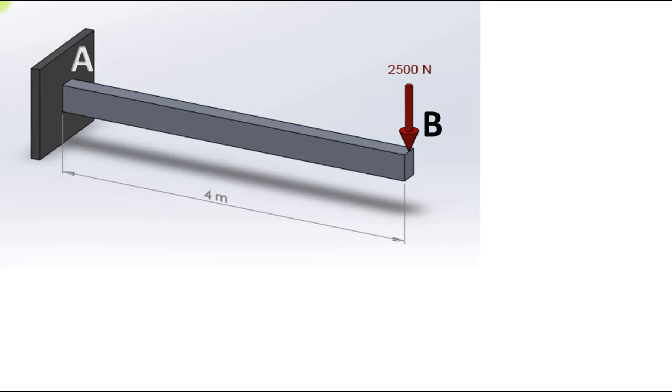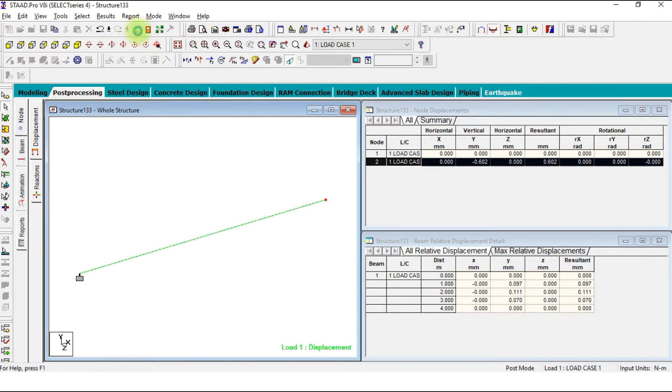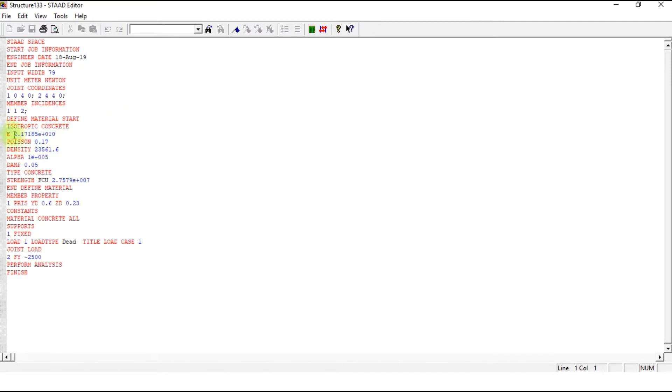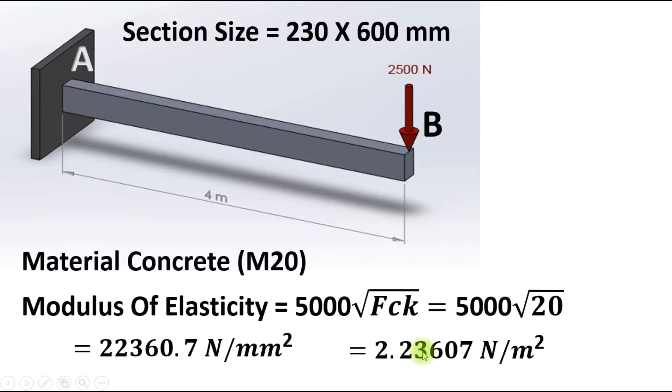The modulus of elasticity STAAD will use is 4700 root fck, but in IS code, in Indian code, we are using a modulus of elasticity 5000 fck, so it is 2.23 Newton per meter square. Let's check it out. The modulus of elasticity in STAAD is 2.17185 times 10 to the power 10.